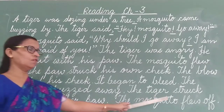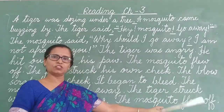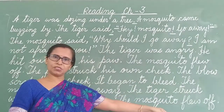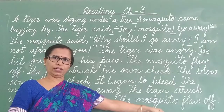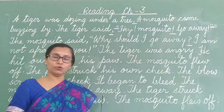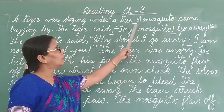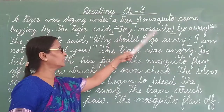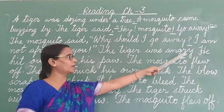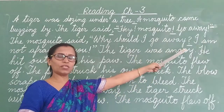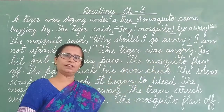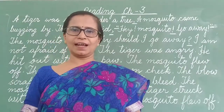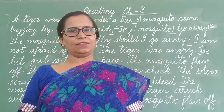So children, for today we will read the lesson up till here only. But you will follow the rules properly — full stop, comma, inverted commas, exclamation mark, and question mark. That's all for today. I hope you all have enjoyed the class. Thank you, children.